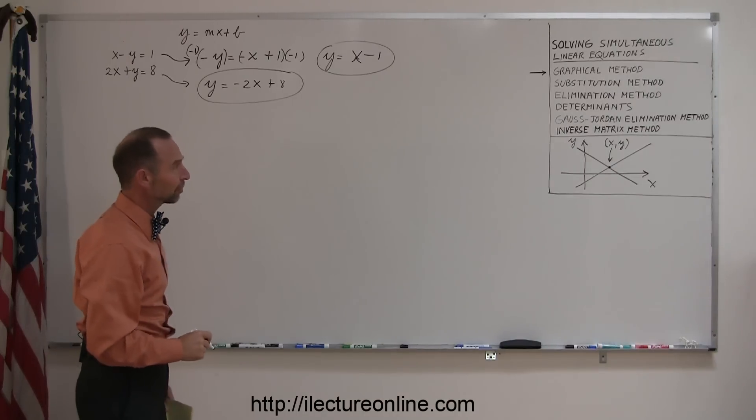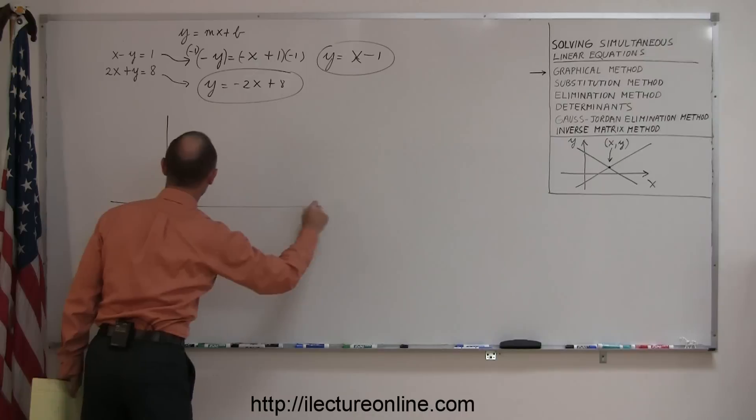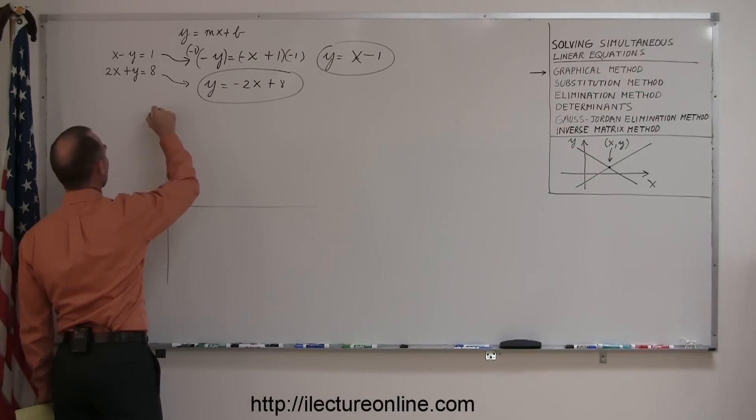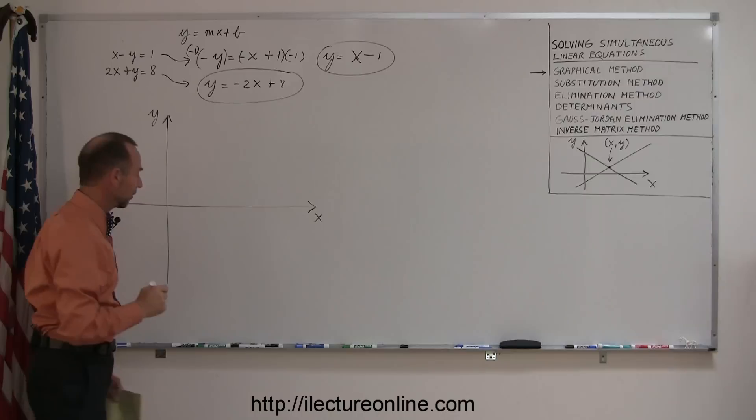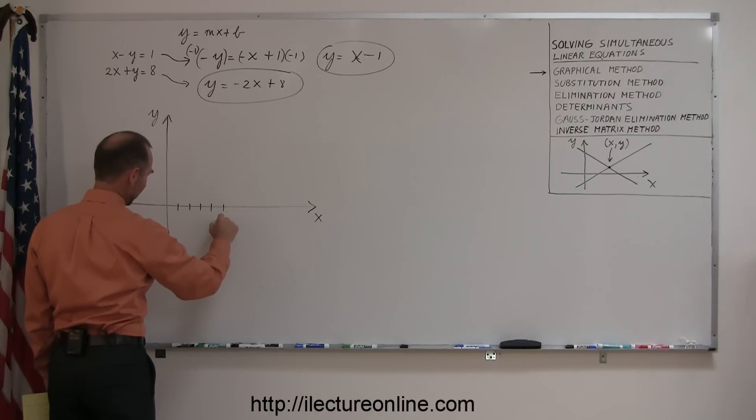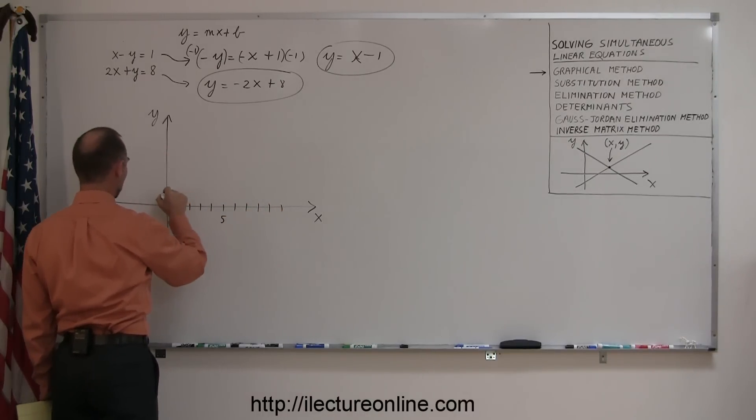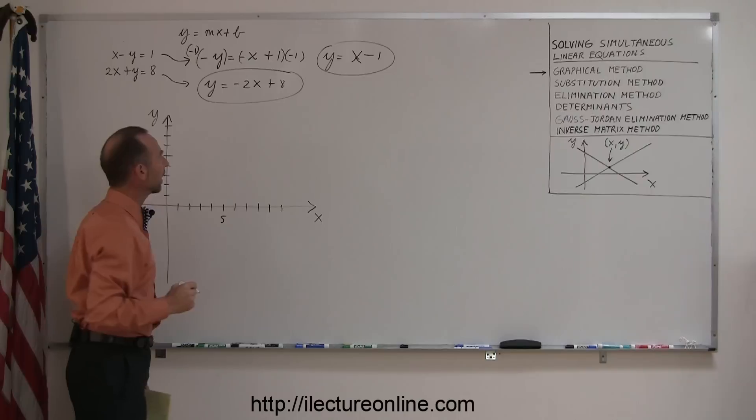So the next thing I'm going to do is graph both these equations. So I need a coordinate system. I need an x and a y-axis. Here's my y-axis. There's my x-axis. Then I draw a few points on there. So this is plus 1, 2, 3, 4, 5, 6, 7, 8, 9, 10. And here, 1, 2, 3, 4, 5, 6, 7, 8. Hopefully, I don't need more than that.